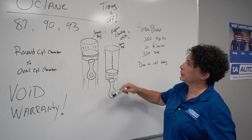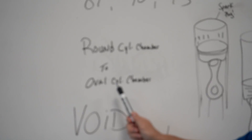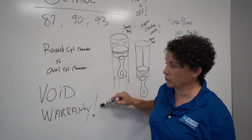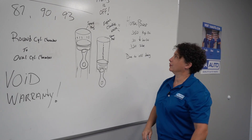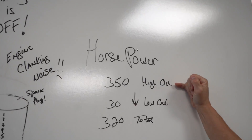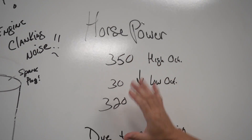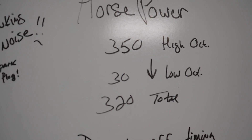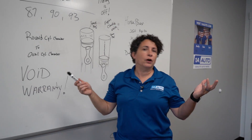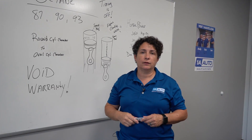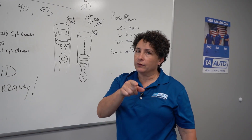If your car calls for high octane, you have to use it. What happens long term: this piston goes up and down, and instead of having a round cylinder chamber you end up with an oval cylinder chamber. That voids the warranty. You can also crack valve seats. Real simple — say you have a car that is 350 horsepower with high octane. With low octane in it, it can drop down to 320 total horsepower due to the timing being off. What's the difference between $3 a gallon and $3.20 a gallon when you have a 15 or 20 gallon gas tank? We're talking about maybe $2. You wouldn't hesitate to spend that on good coffee.